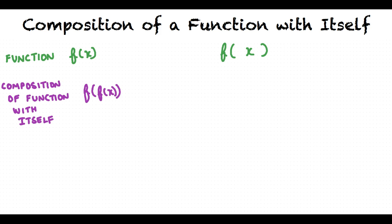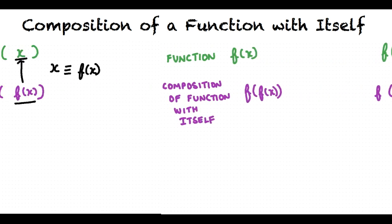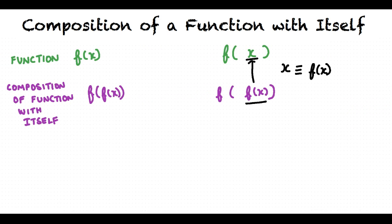By definition, the composition of a function with itself is f(f(x)). Comparing both expressions, we can see that we have f(x) in the second expression in the place of x in the first expression. Thus, in order to evaluate the composition of a function with itself, we first evaluate the function and substitute this value for x in the function itself.